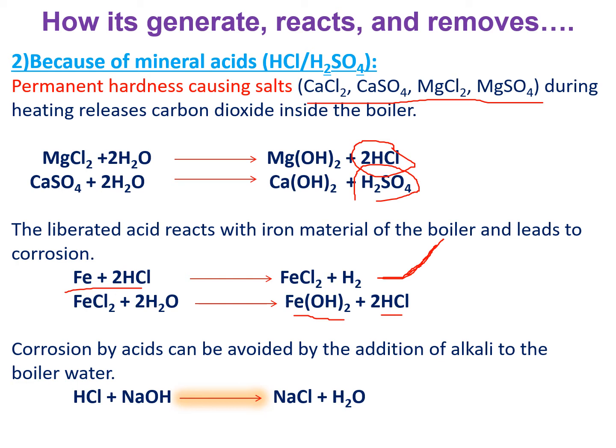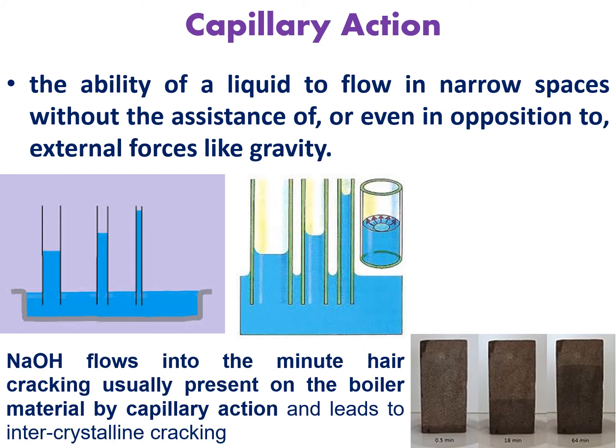How can we remove these acids? Acids react with bases and are neutralized to form salts. We can remove the acids by adding a quantitatively correct amount of base. These are the main problems due to boiler corrosion: dissolved oxygen, CO2, and mineral acids — how they are generated, how they interact with iron, and how we can remove them.